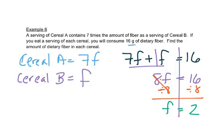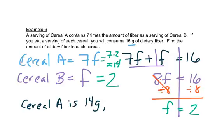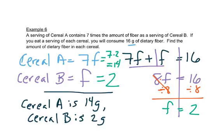Again, we have to go back and figure out what that means. F was right here, so that's 2. A said 7 times F, which means 7 times 2, which is 14. So to answer this, we'd have to say that cereal A is 14 grams and cereal B is 2 grams. And those together are our answer.